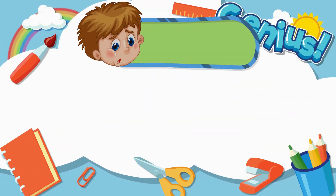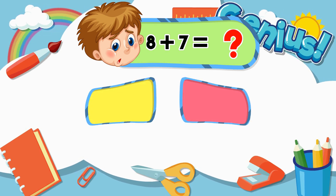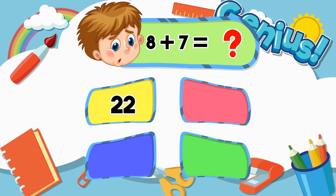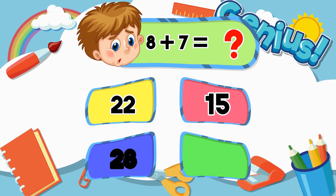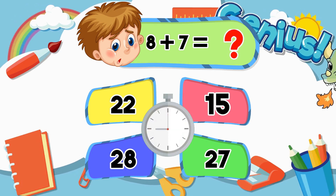What is 8 plus 7? 15, 28, 27. Answer: 15.